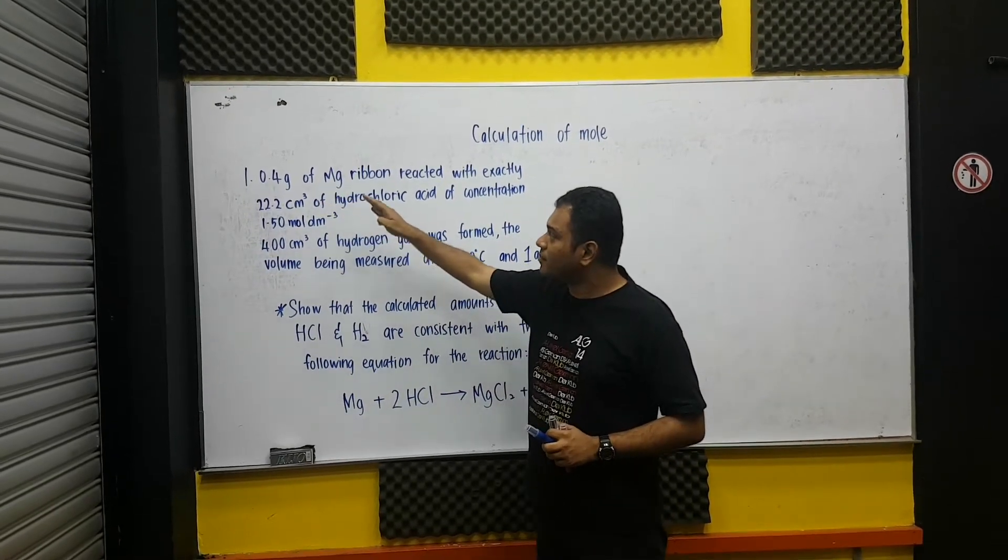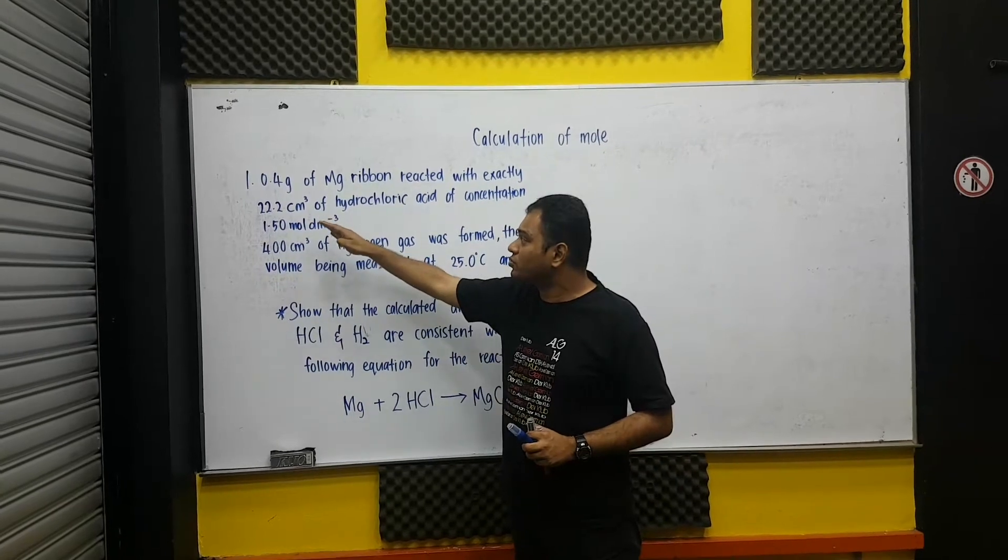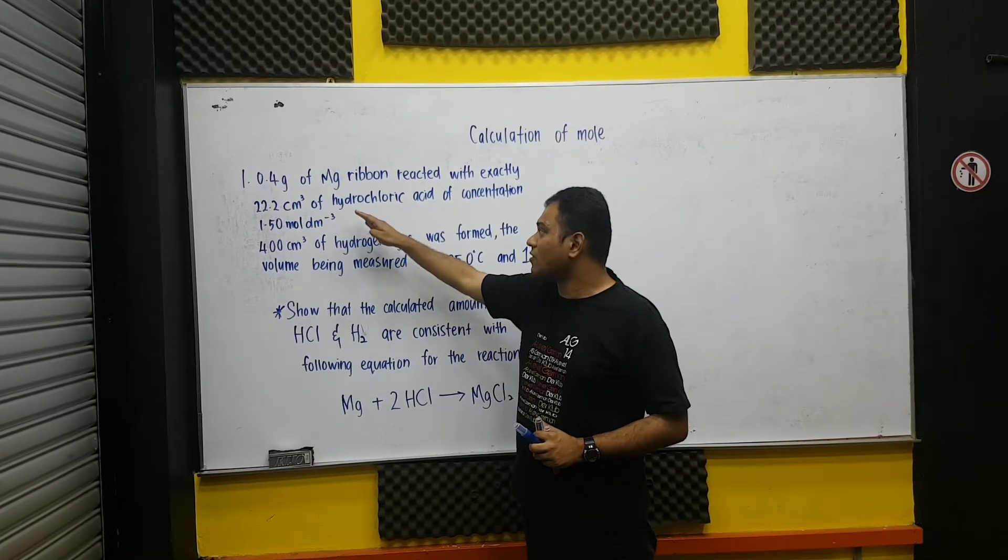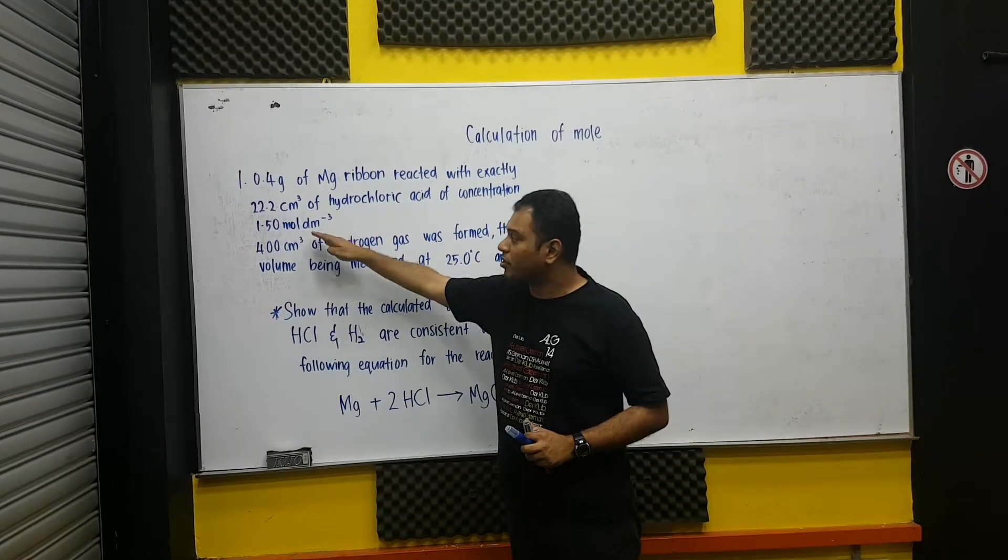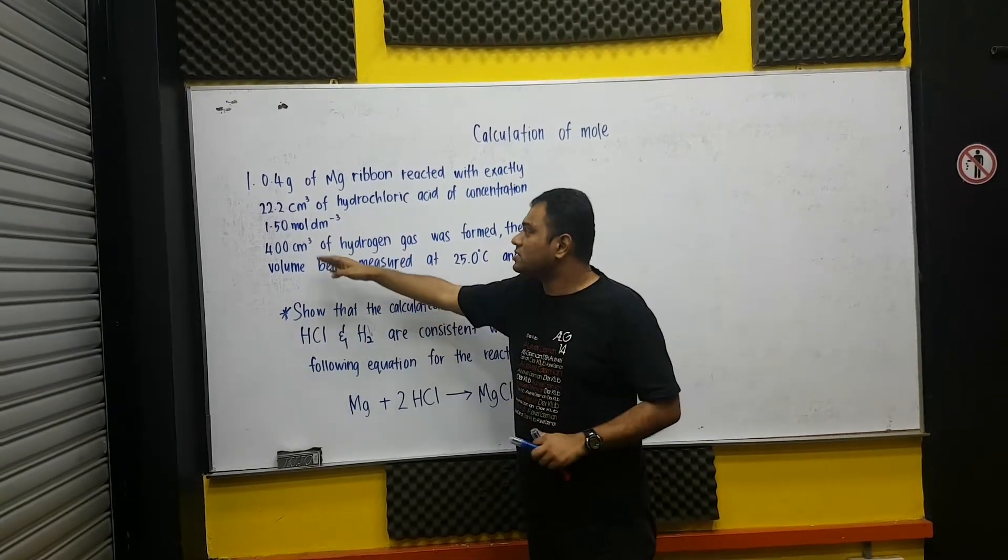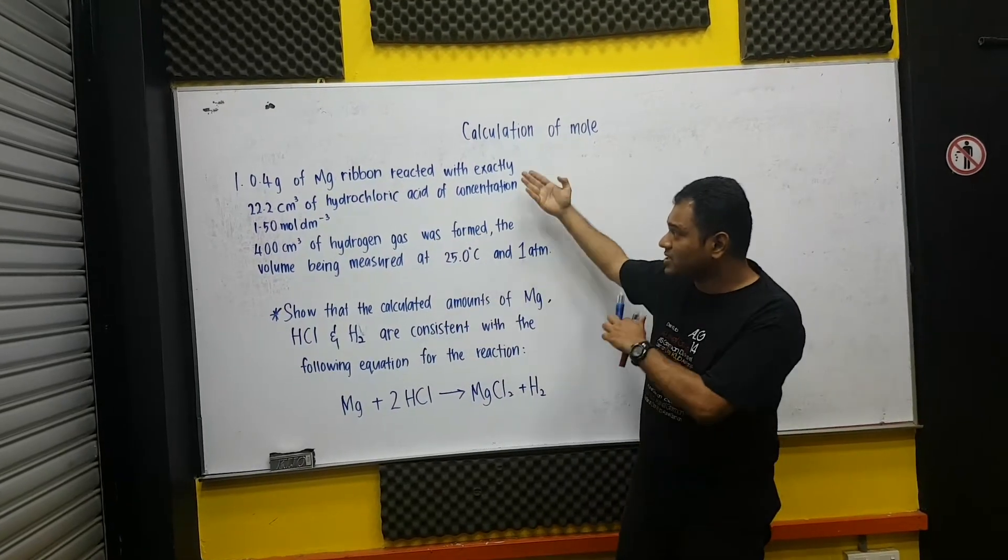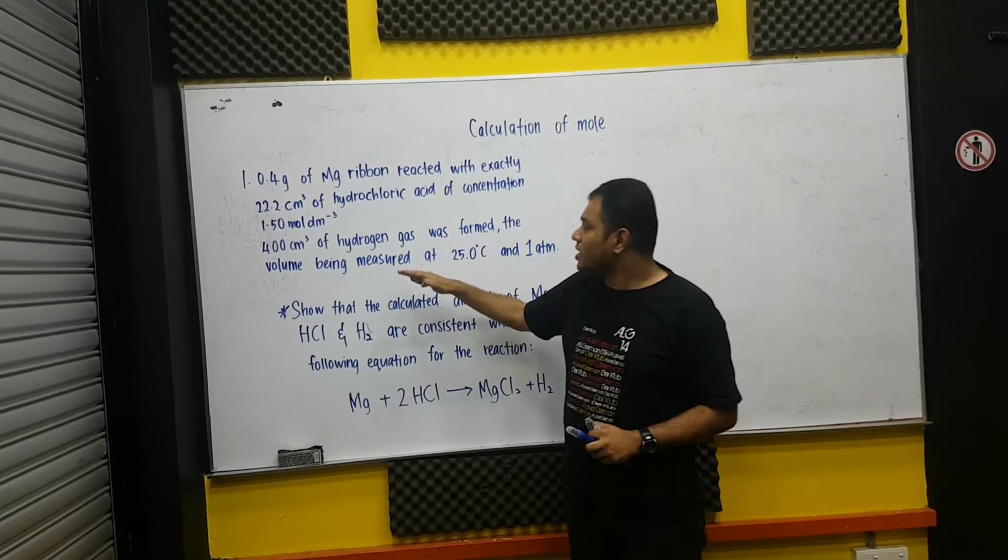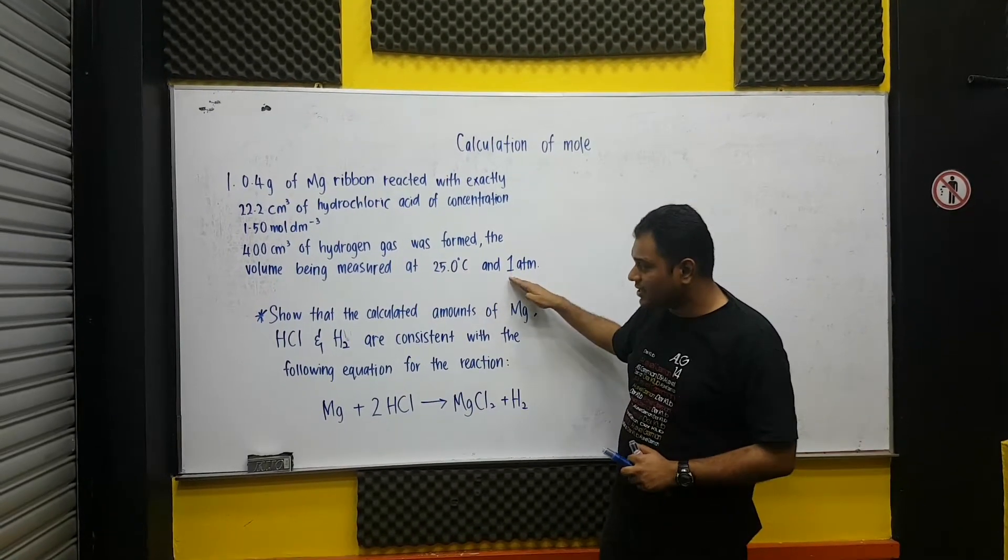It is given 0.4 gram of magnesium ribbon reacted with exactly 22.2 cm³ of hydrochloric acid of concentration 1.5 molar. It will produce, 400 cm³ of hydrogen gas was formed from this reaction. The volume being measured at 25°C and 180 kPa.